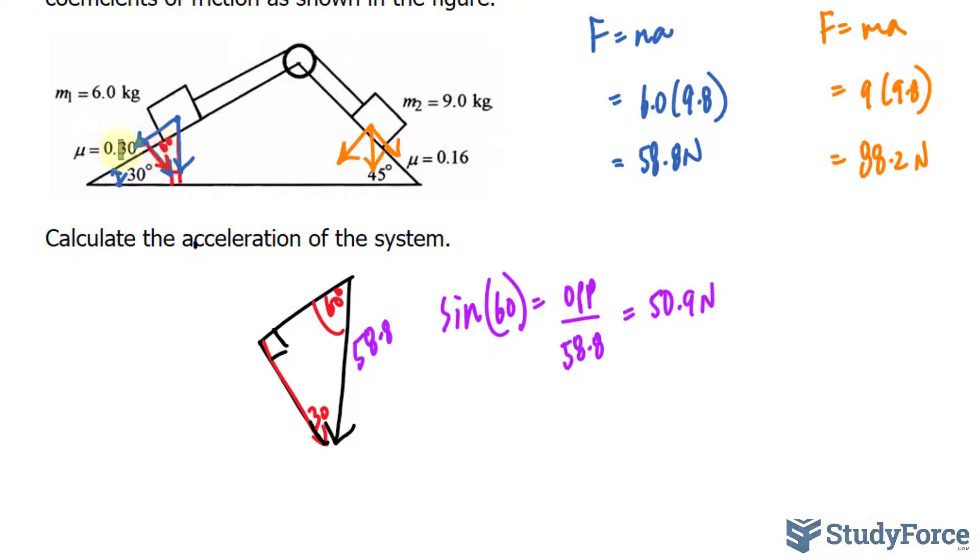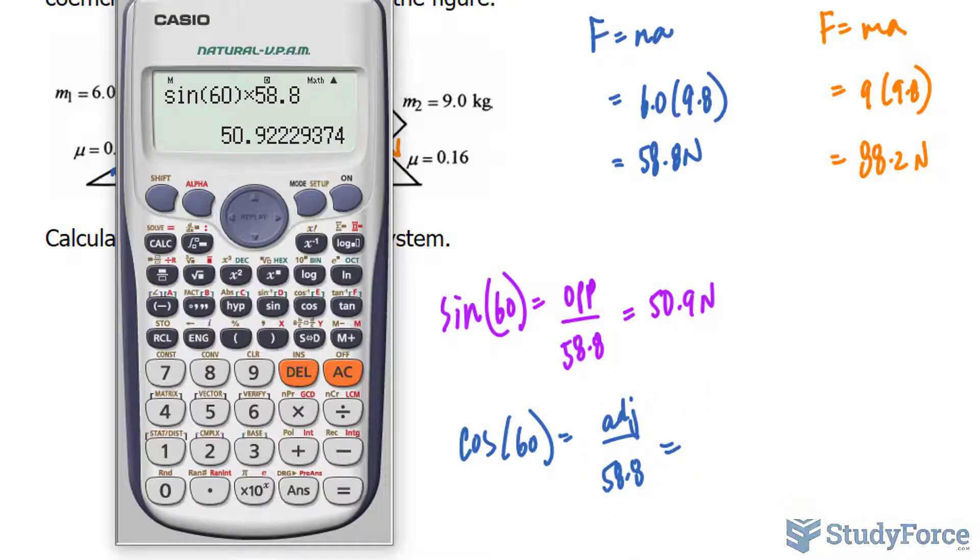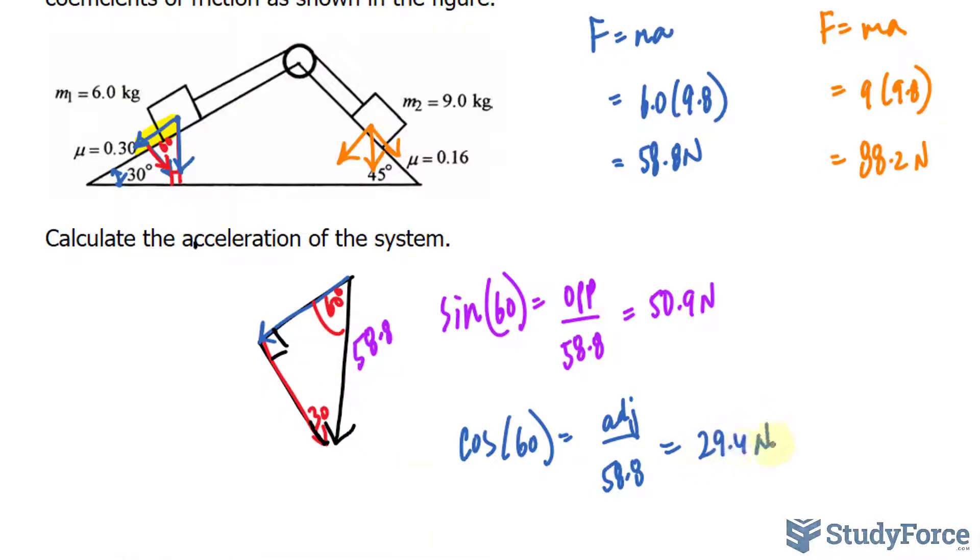I need to also find out the magnitude of this vector using the same sort of idea. I'll be using cosine this time, cosine 60. And cosine, that's adjacent, that's what we're looking for now, this one. So cosine is adjacent over hypotenuse, hypotenuse we know to be 58.8. And by calculating this, 58.8 times cosine 60, I end up with 29.4 newtons. So adding these two components together, we end up with the resultant vector.